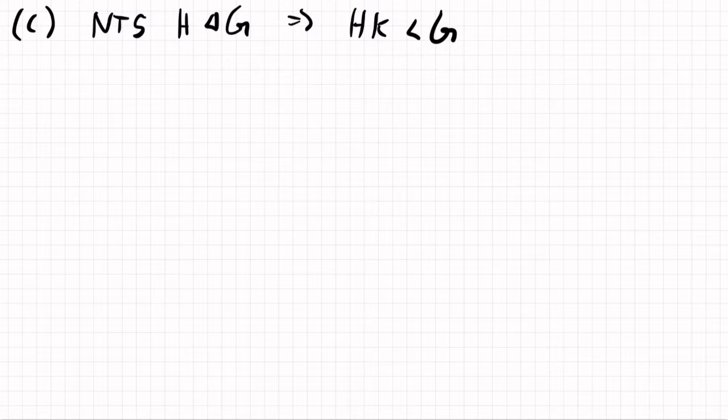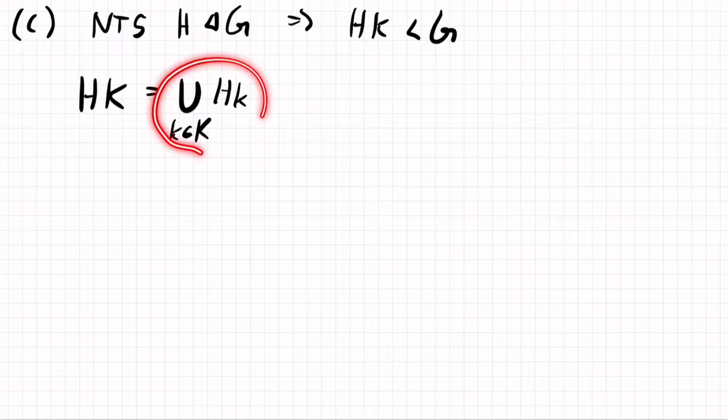And so what we can do here, we'll do a coset argument. So let's take a look at the set HK. Well, one way of thinking about this is, this is a union of the sets H and little k, for k in K, little k and big K. So what am I saying here? I'm saying that this set happens to be a union of cosets.